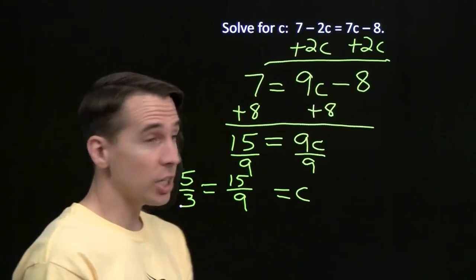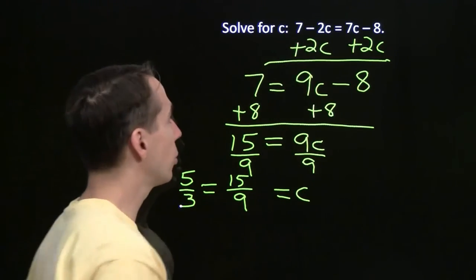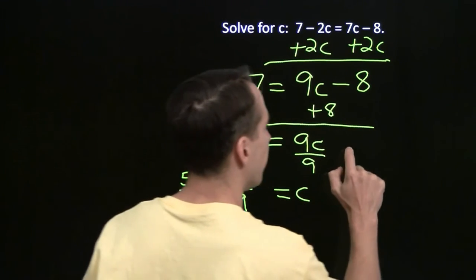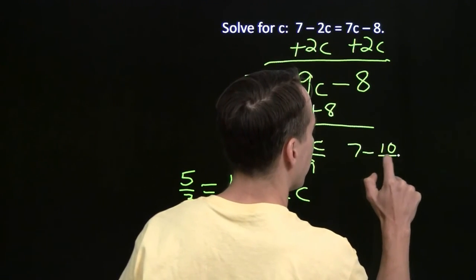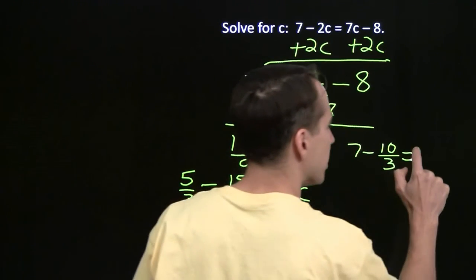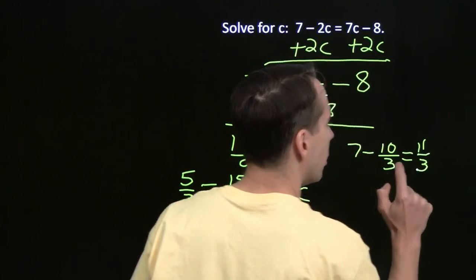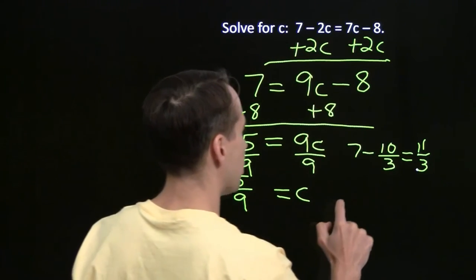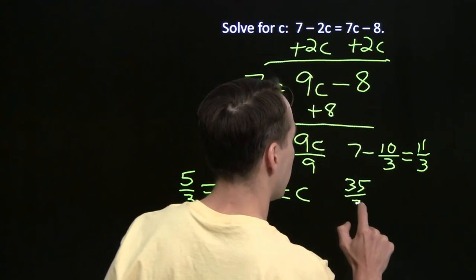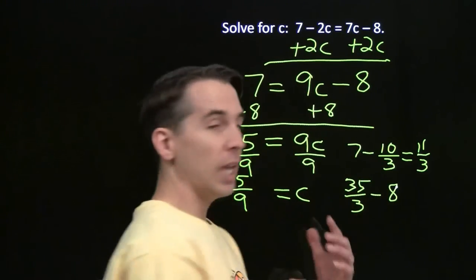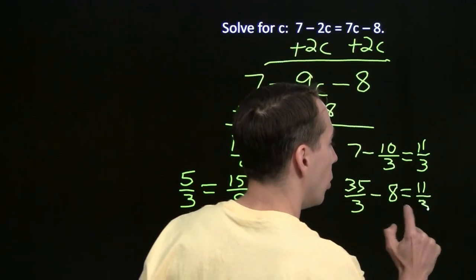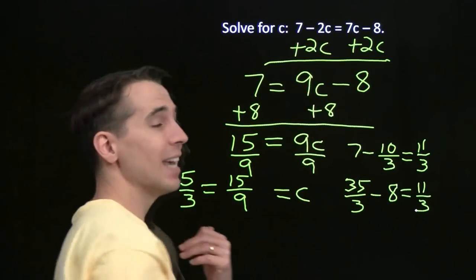And once again, we can check our answer. We can take this 5 thirds and we put it up in our original equation. So if we put 5 thirds in here, we have 7 minus 10 thirds. Well, 7 is 21 thirds, so 21 minus 10, that's 11 thirds. And then over here, we have 7 times 5 is 35 thirds minus 8. 8 is 24 thirds, so sure enough, once again, we get 11 thirds. Our answer checks out, and we're done.